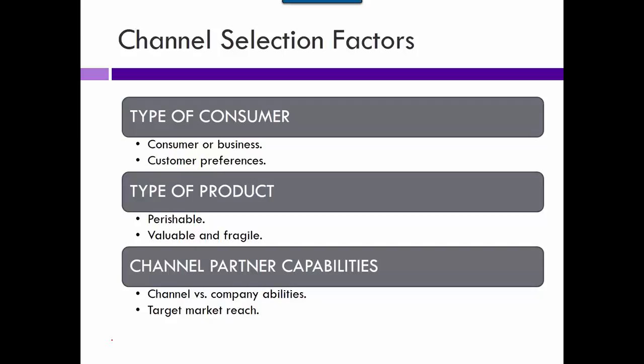When selecting a channel, you have to consider: what type of consumer am I selling to — consumers or businesses? How do they prefer to get it — online or in person? What type of product is it — perishable, valuable, or fragile? What can my channel partners do for me versus what can I do myself? What markets can they reach, and can they help me reach not just more but the right markets?